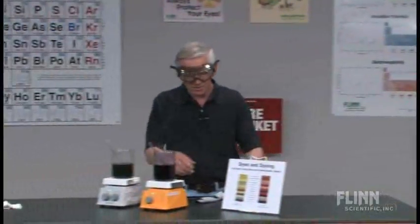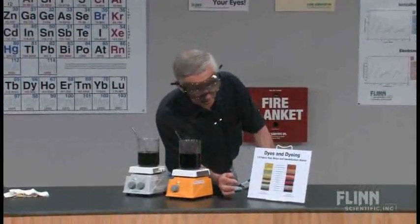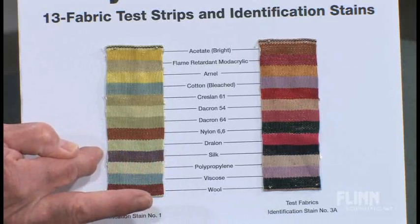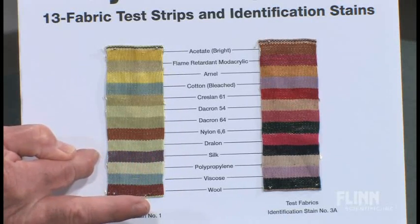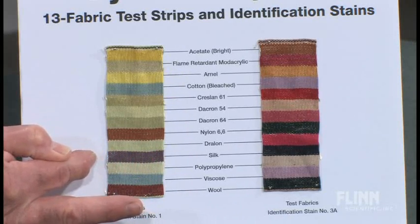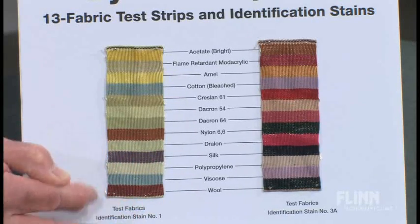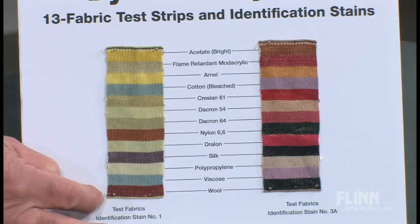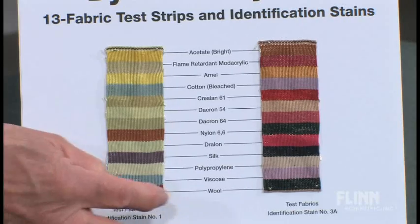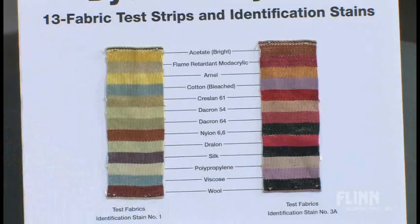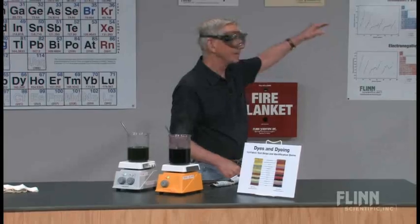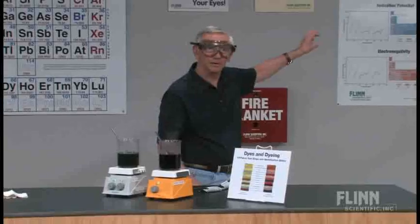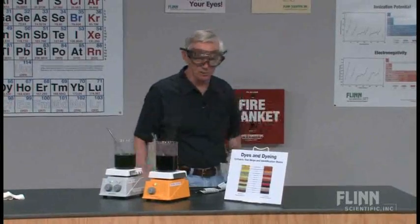How does the silk do on 1A? Oh, nice — intense, kind of a maroon color. Here's wool. Notice again, the ionic and polar dye really well.